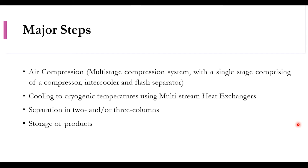The major steps in the air separation process include air compression. A single stage of compression includes a compressor which increases the pressure, an intercooler which reduces the temperature, then a flash separator to remove the produced condensate, and an adsorbent installed at the end to remove CO2. CO2 and water, even in small traces, can cause serious problems in the cryogenic process as it may lead to air freezing. The air is then cooled to cryogenic temperatures using multi-stream heat exchangers.